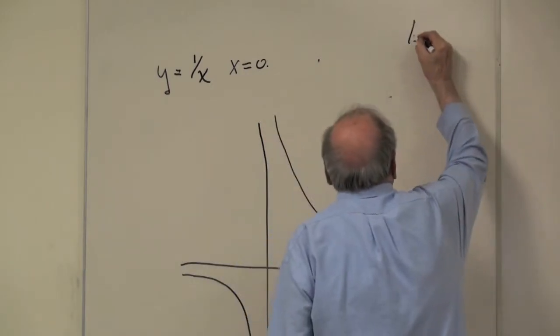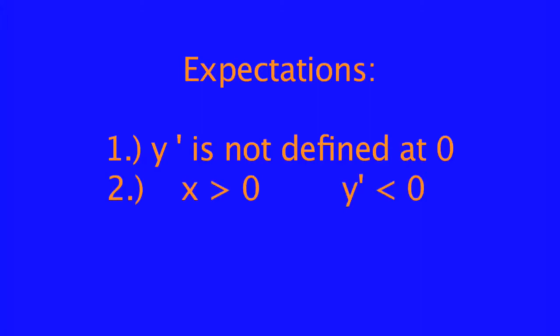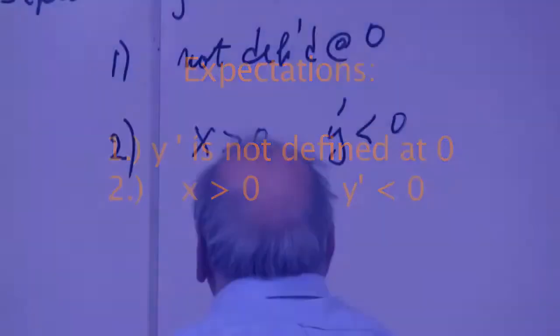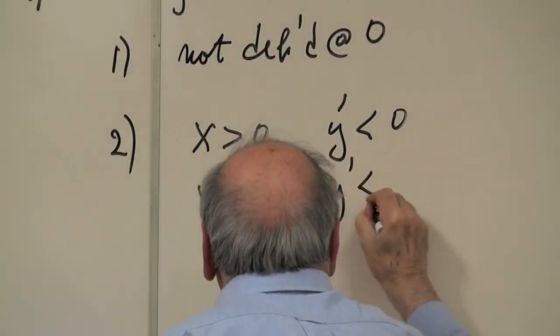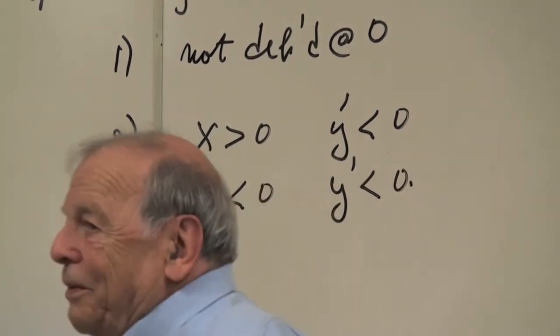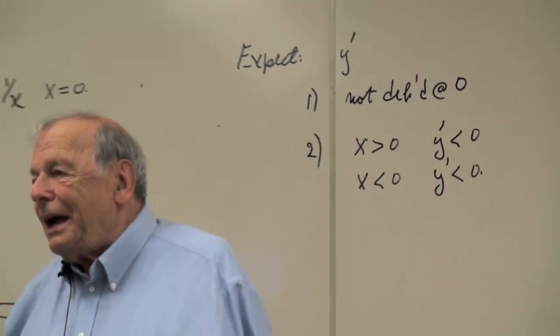Now again, let's write down some expectations. For instance, it's not defined at 0, because there's no function that can't have a derivative. Item 2 might be, for instance, what about for x positive? y prime is negative, what about for x negative? So this has a function whose derivative should always be negative.